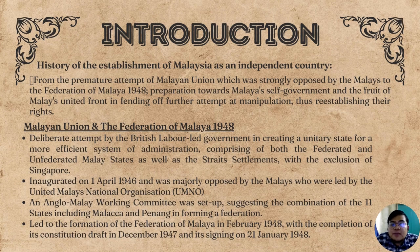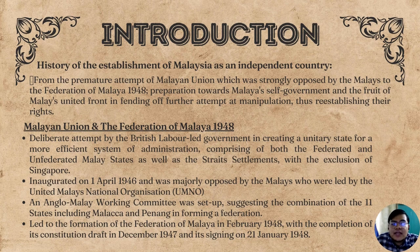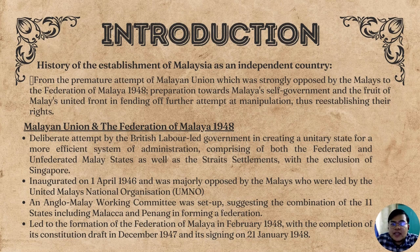Starting with our introduction, it becomes clear that many different events had taken place in the process of Malaysia — or as it was then, the Federation of Malaya — in gaining independence, including the establishment of the Malayan Union and consequently the Federation of Malaya 1948. The Malayan Union, seen as a premature attempt by the British to gain total power, was strongly opposed by the Malays, leading to the establishment of the Federation of Malaya agreement 1948, thus restoring the rights and privileges of the Malays as the major component in Malaya.